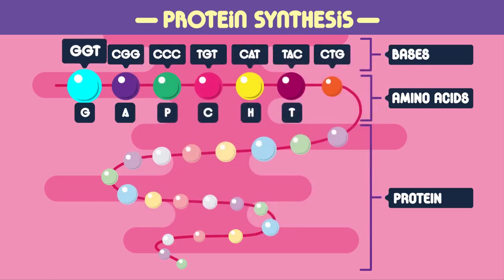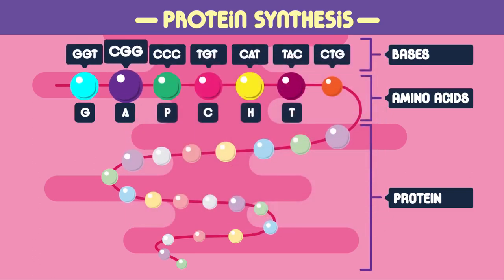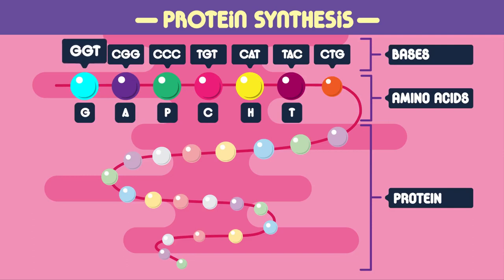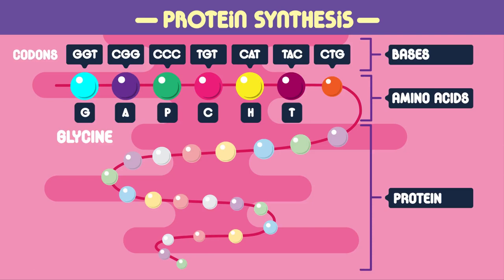A set of three bases in the DNA molecule codes for a particular amino acid. GGT, for example, codes for the amino acid glycine. The three base codes are known as codons, so GGT is a codon for glycine.